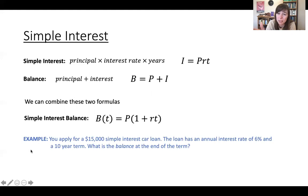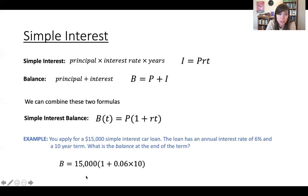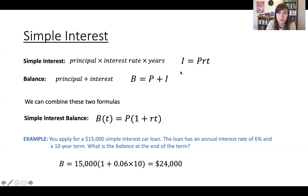That single formula is the simple interest balance formula. Written as a function of t, balance at time t equals the principal times one plus the rate times the time: B(t) = P(1 + rt). That was calculated by replacing I in the balance formula with PRT and then factoring out the P. Using this single formula for the same car loan example gives $24,000 — exactly the same result, which is exactly what it should be since we're doing the same thing.